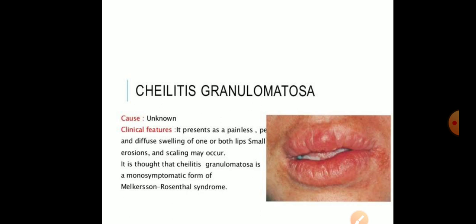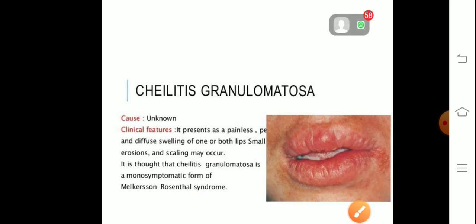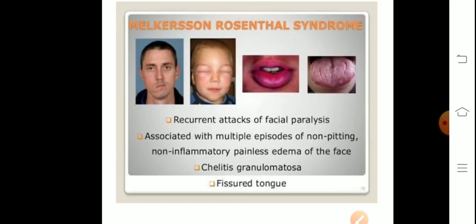It can involve one lip — both upper lip and lower lip. Small erosions may occur. Cheilitis granulomatosa is associated with a syndrome, and that is Melkersson-Rosenthal syndrome. This is very important — cheilitis granulomatosa is associated with Melkersson-Rosenthal syndrome.